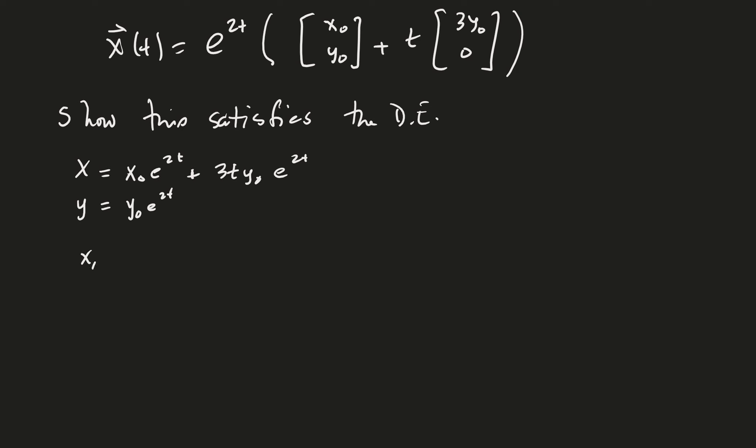So therefore x prime is equal to 2x0 e to the 2t plus 3y0 e to the 2t. Be sure and use the product rule. Plus 6ty0 e to the 2t. This probably isn't going to be real entertaining just watching me do algebra, but I think this will get done pretty fast.